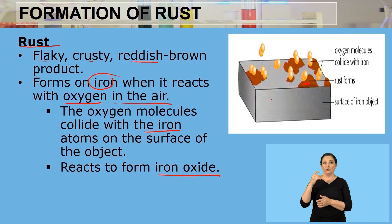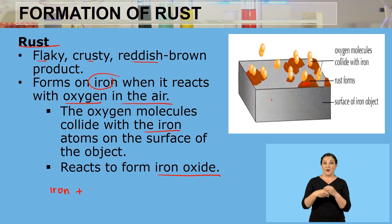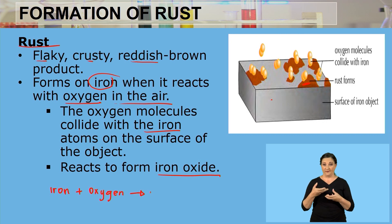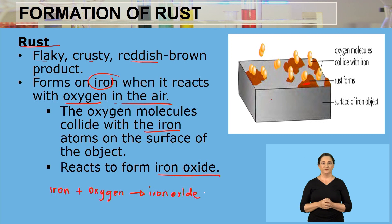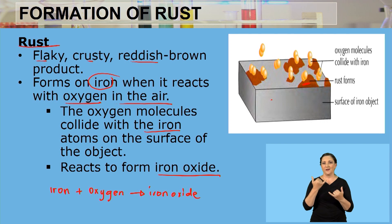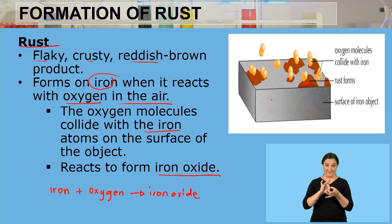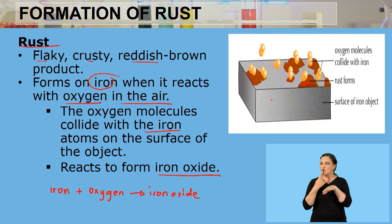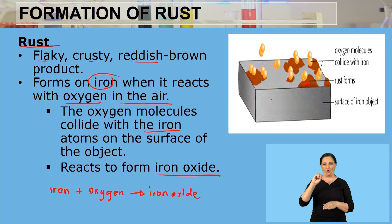The word equation for this reaction is: iron plus oxygen reacts to form iron oxide. As shown in the picture, the iron substance collides with oxygen molecules from the air, and the chemical reaction between the surface of the iron and the oxygen forms that reddish-brown, flaky substance called iron oxide.